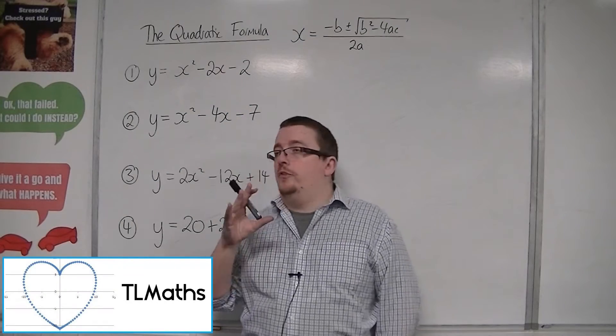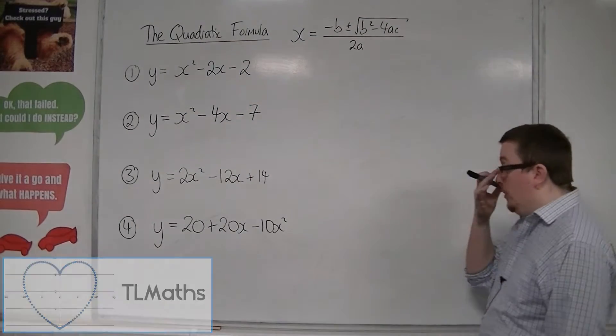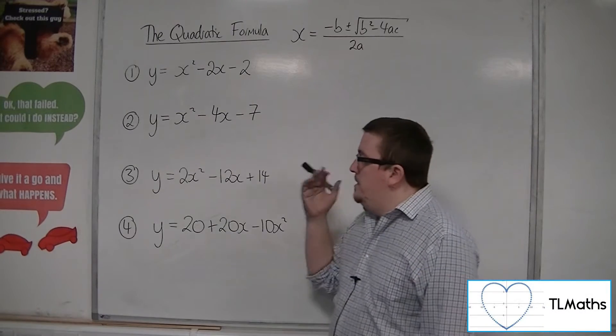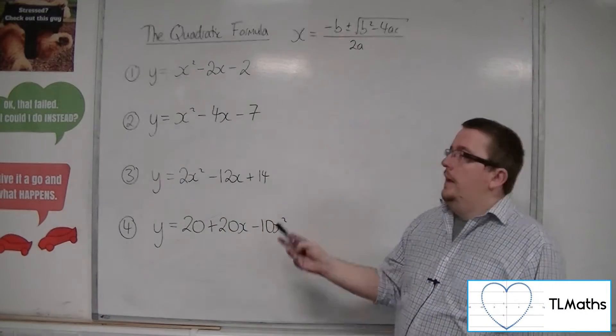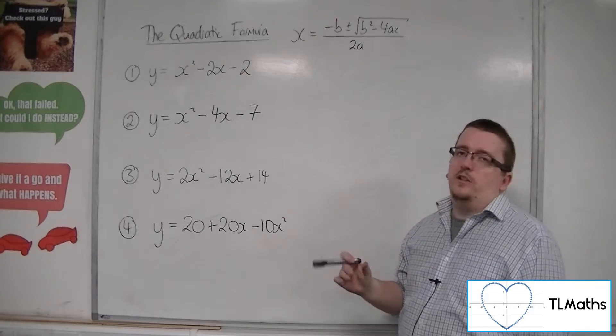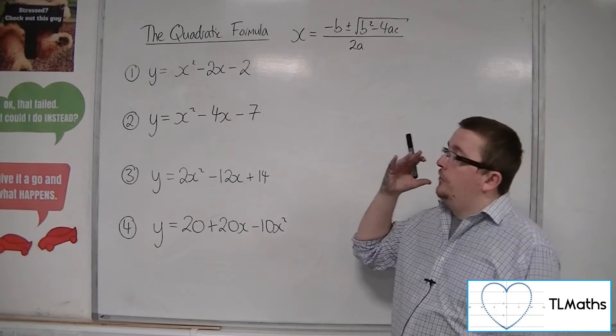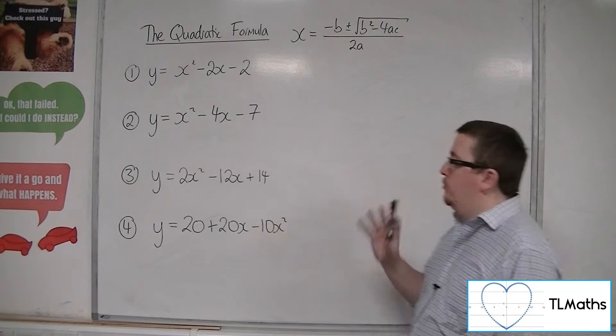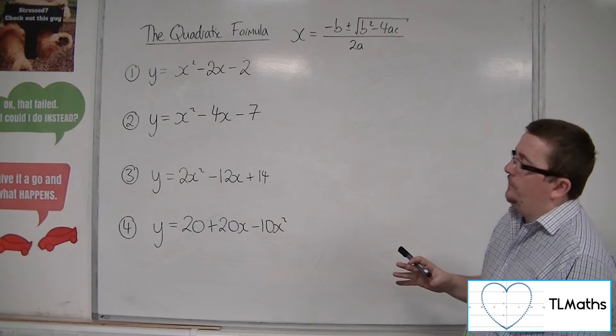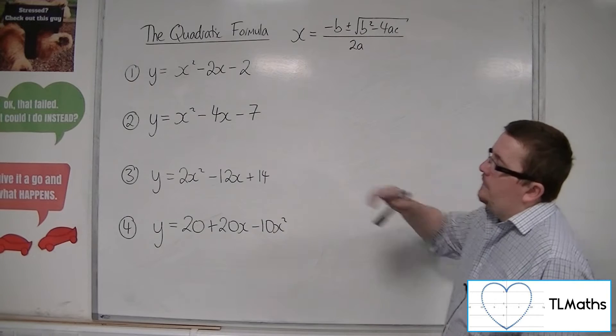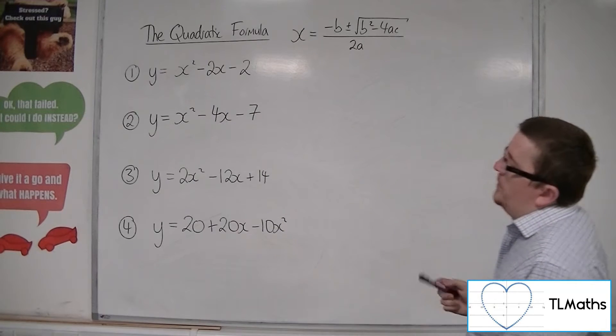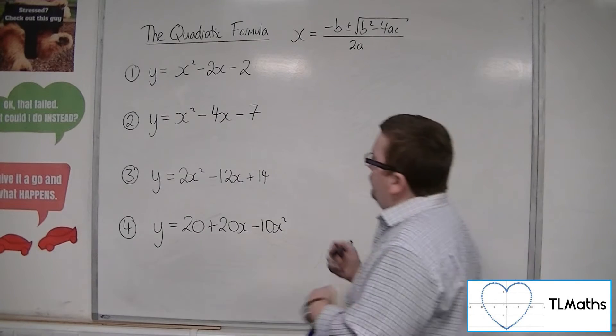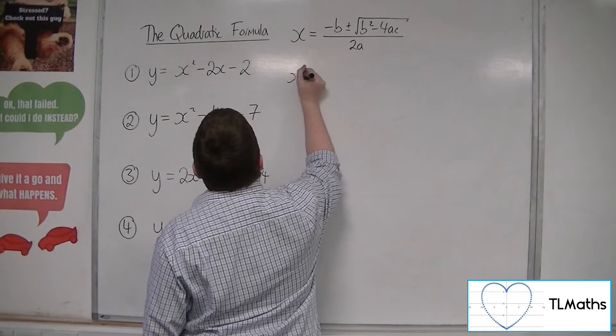So let's say I want to sketch each of these four quadratics and none of them factorise. And so what I need to do is I need to use the quadratic formula to determine where they cross the x-axis. So let's have a look at this first one. Y is equal to x squared minus 2x minus 2. So we're going to go in with the quadratic formula.